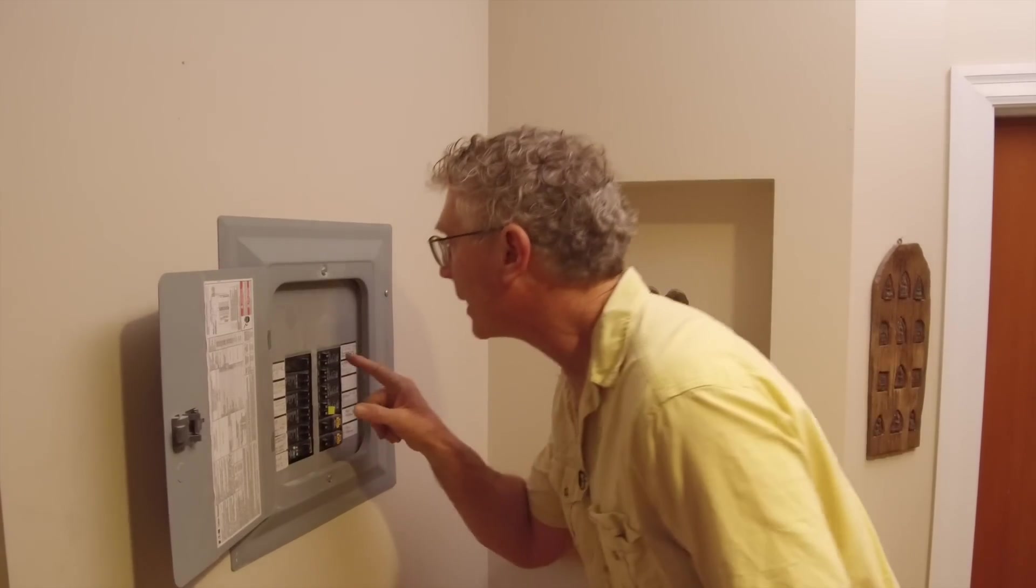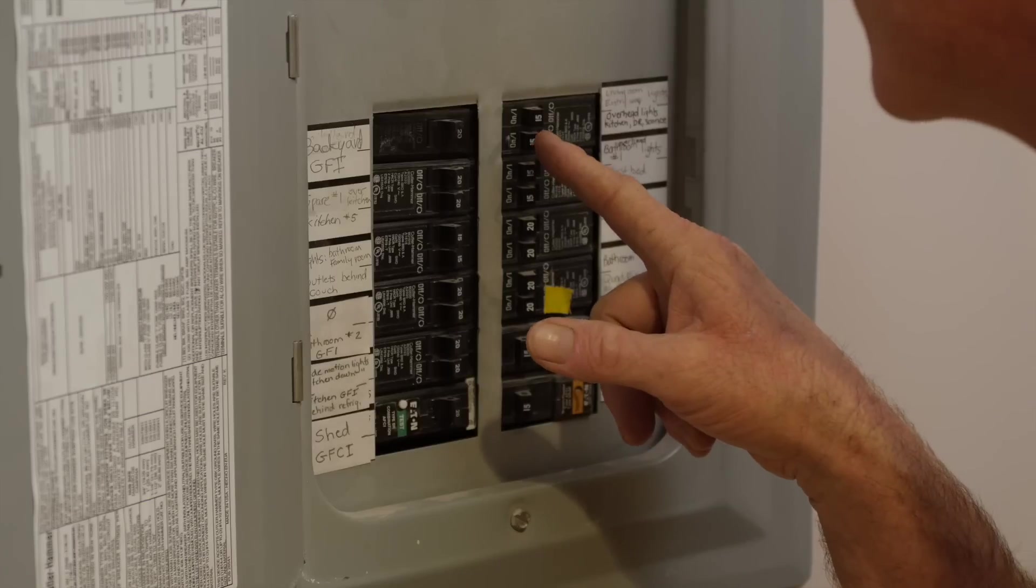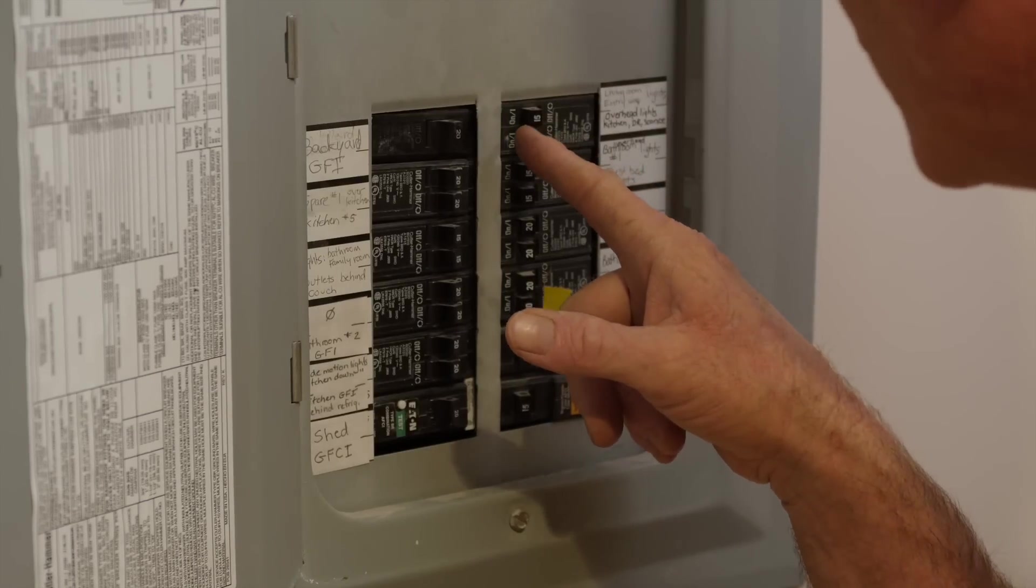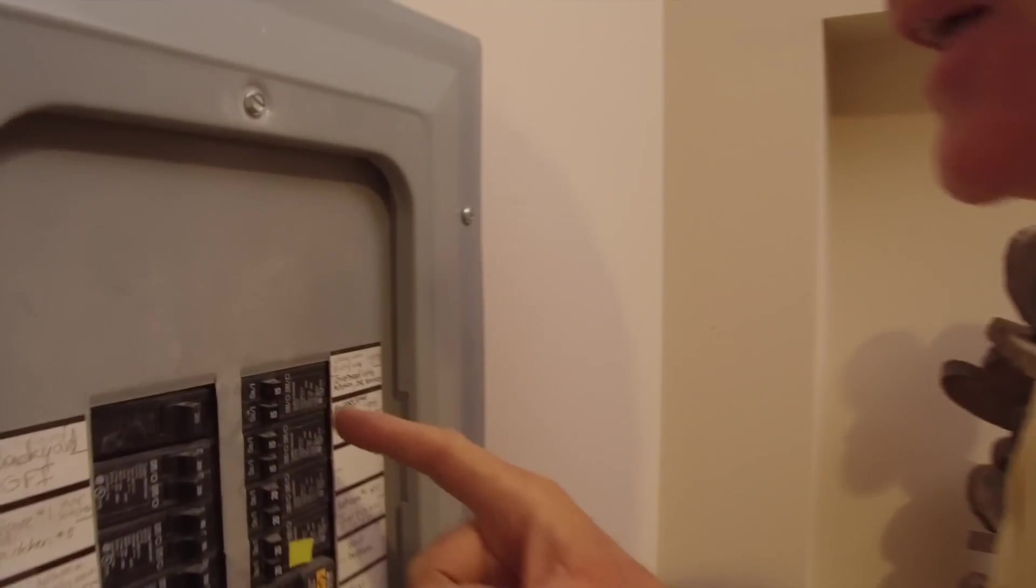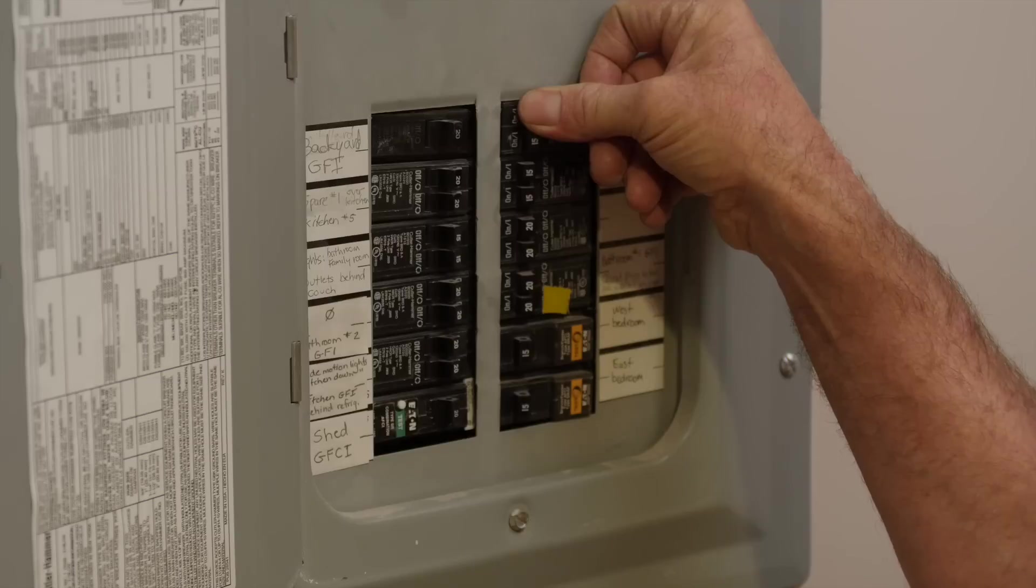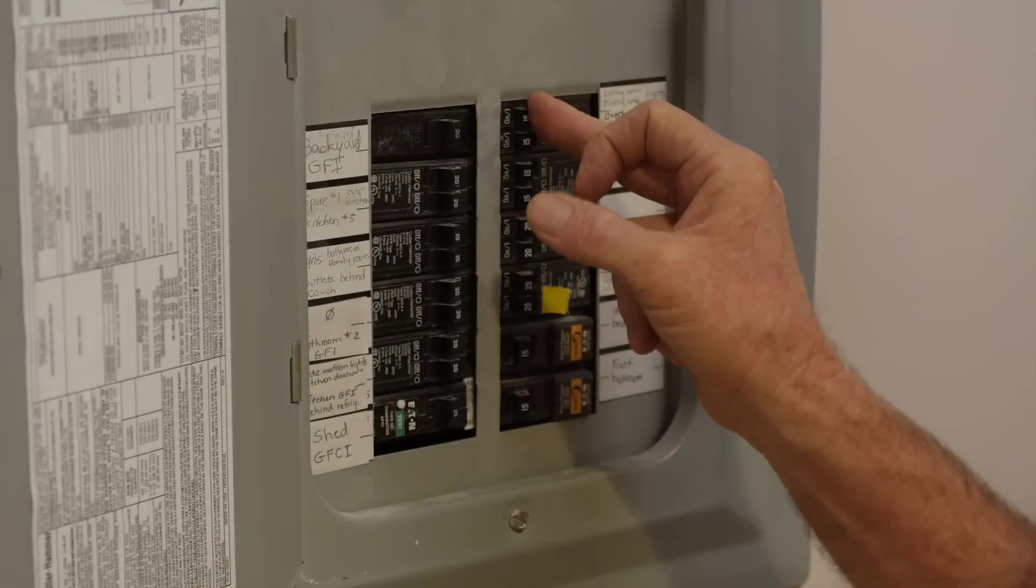So, I come out here, and you have to look very closely, and you can see that this 15 amp breaker is ever so slightly different than the other ones. That's what a popped breaker looks like. To reset it, you go back, and then forward. Now we're back on.